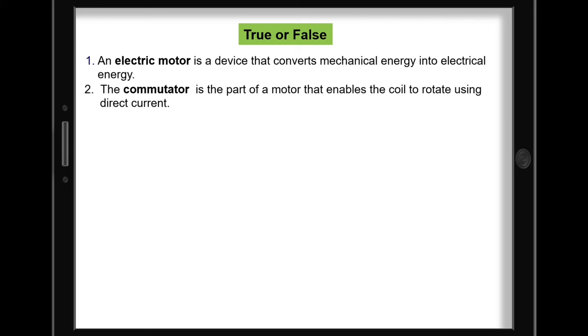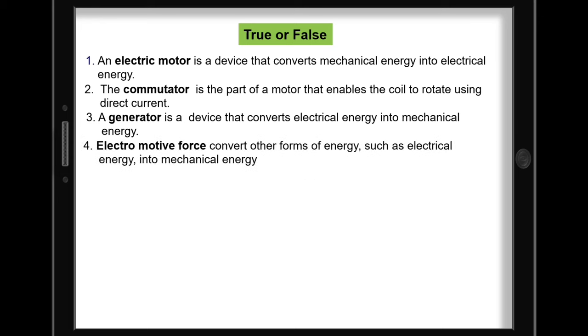2. The commutator is the part of a motor that enables the coil to rotate using direct current. 3. A generator is a device that converts electrical energy into mechanical energy. 4. Electromotive force converts other forms of energy such as electrical energy into mechanical energy. 5. DC motors are mostly powered by cells and batteries.